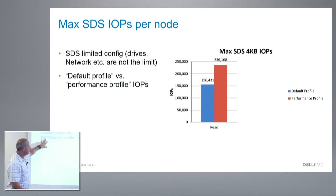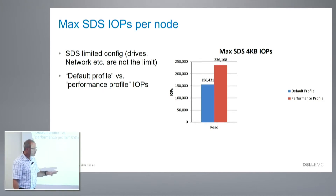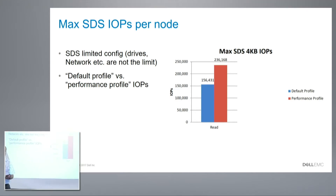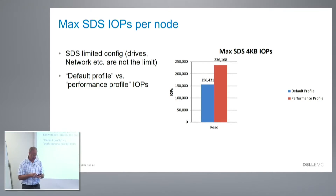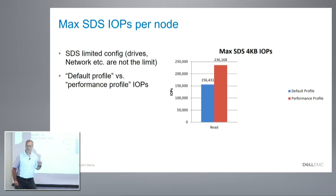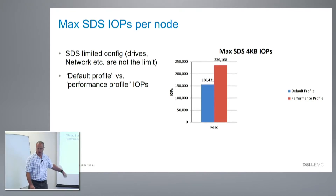If you want a little bit more and consume a little bit more resources, you can get 230,000–240,000 IOPS, again per node or per SDS. This is for reads. The resources we're talking about are RAM and CPU — mostly RAM and CPU, and I'll show in a minute.